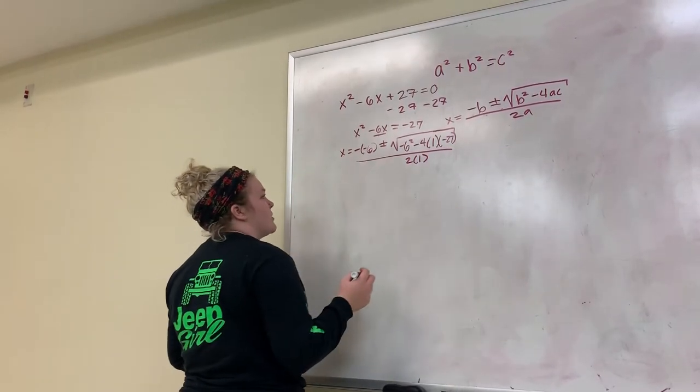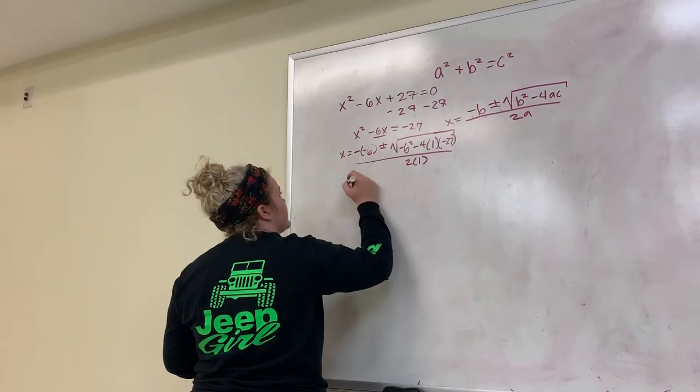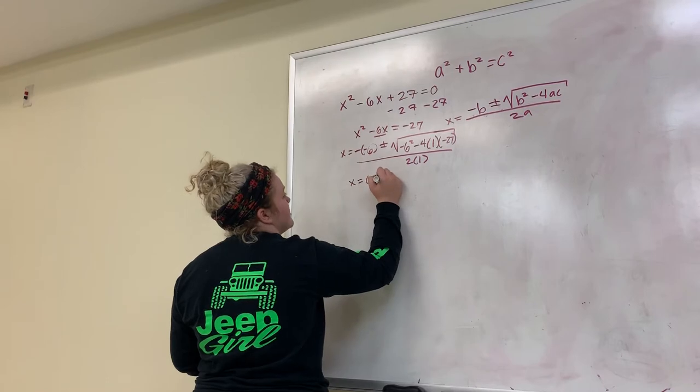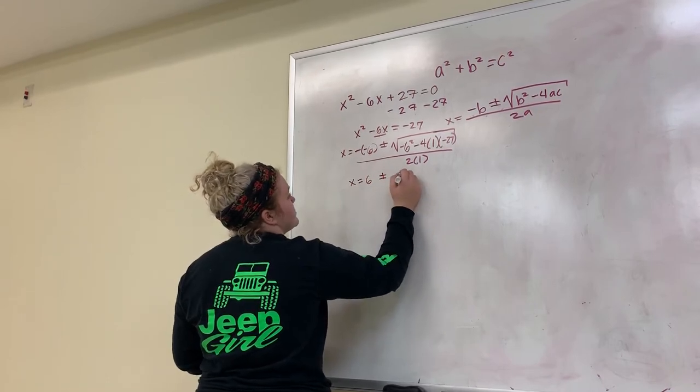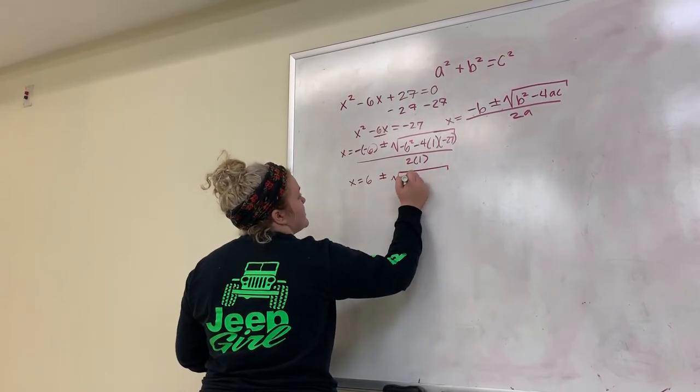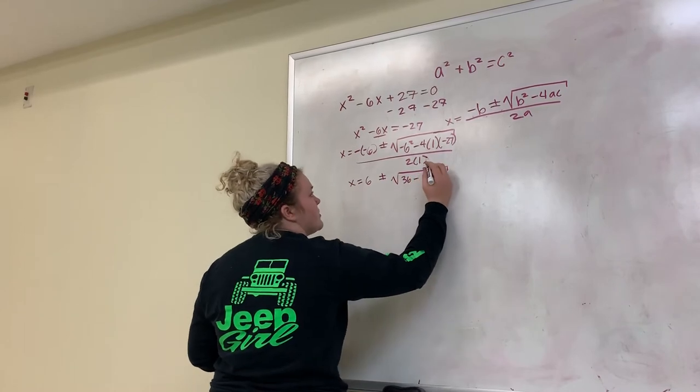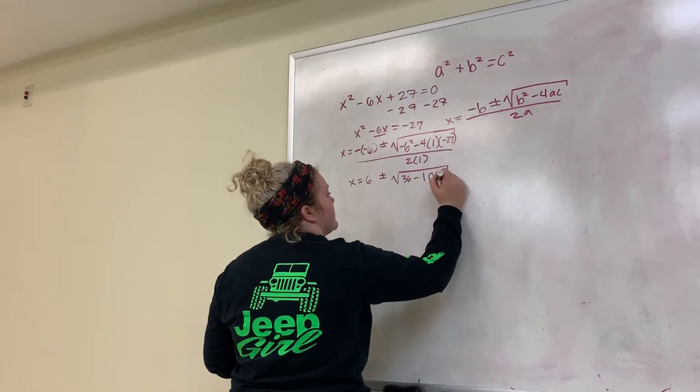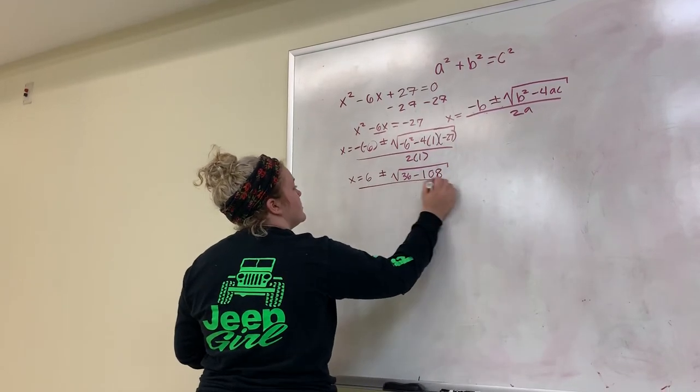And next step, we're going to be solving the multiplication. So this would be x equals 6 plus or minus square root of 36 minus 108 over 2.